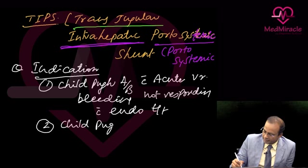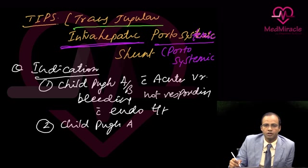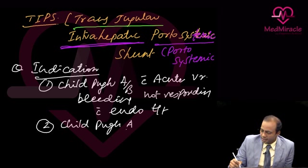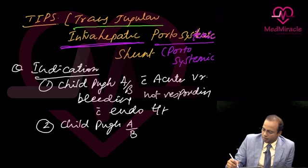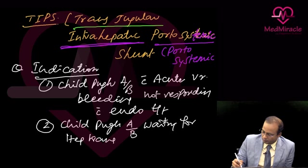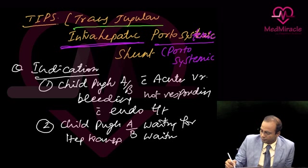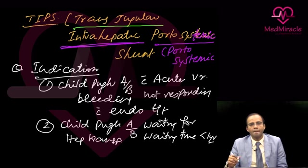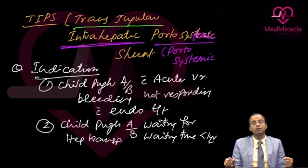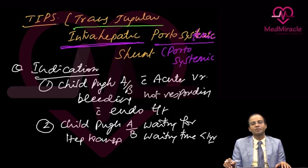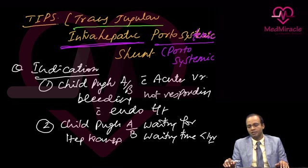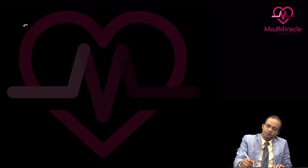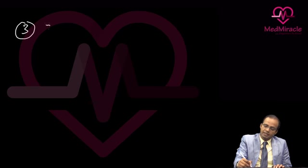Another indication for TIPS is Child-Pugh grade A or B waiting for hepatic transplantation with a waiting time of less than one year. TIPS is preferred in this case because it does not change anatomy, but the blockage rate of the TIPS stent is higher, so after one year chances of blockage are very high. The third indication is intractable ascites.